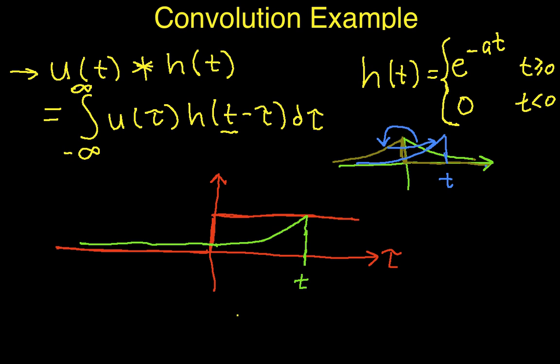So what we need to do then is multiply u of tau by h of t minus tau. And when we do that, we see immediately that for values of tau greater than t, h of t minus tau is zero. So we're going to have h of t minus tau times u of tau equal to zero.